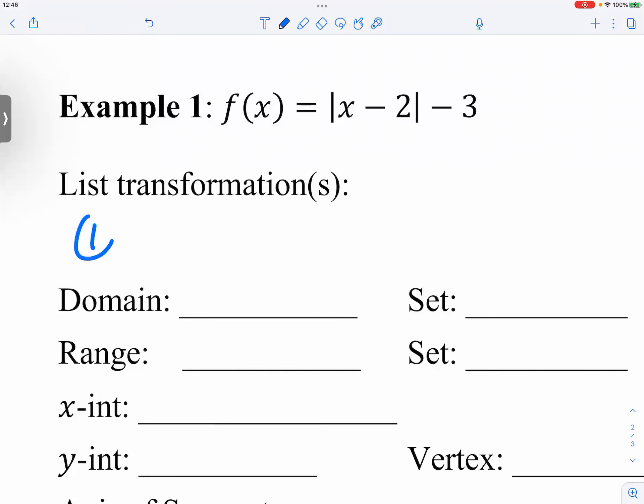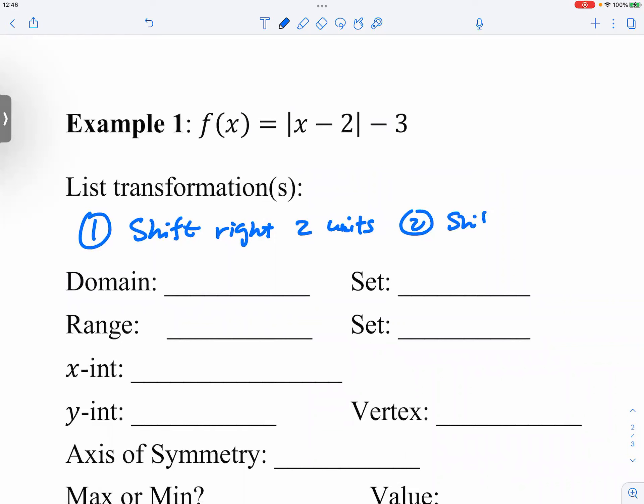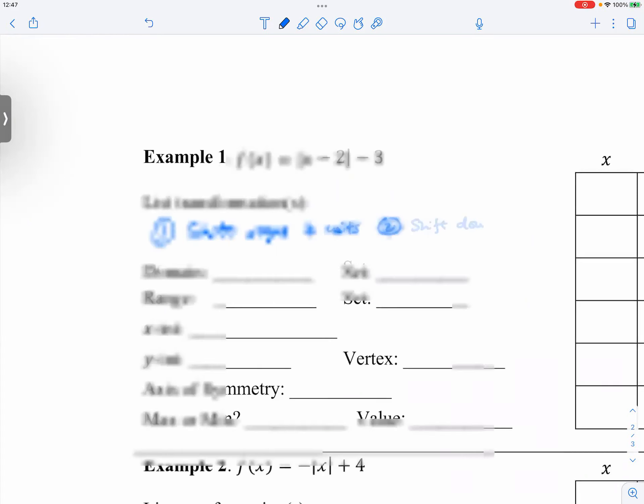So the first transformation for example one would be shifting to the right two units, and number two transformation would be shift down three units.